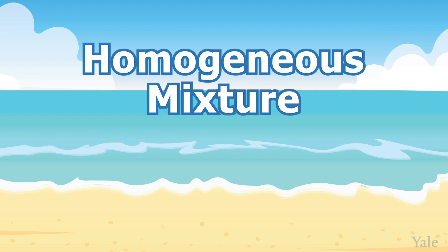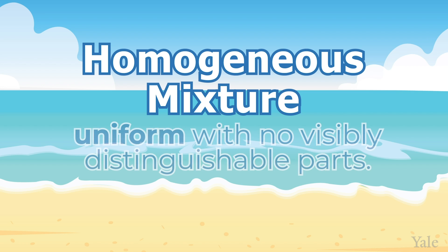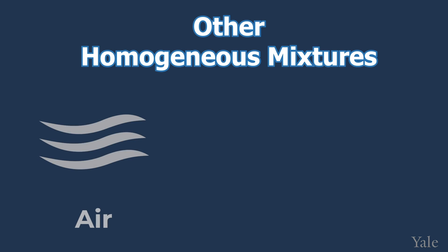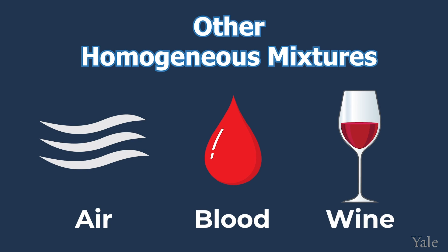Seawater is a homogeneous mixture because it is uniform with no visibly distinguishable parts. You cannot tell the difference between seawater and pure water by looking at it. Other examples of homogeneous mixtures are air, blood, and wine.